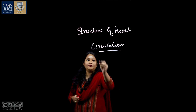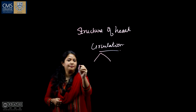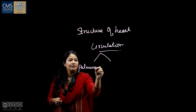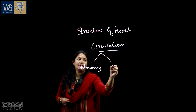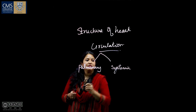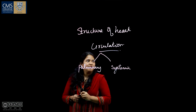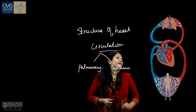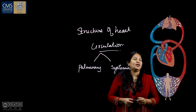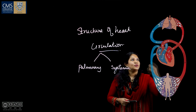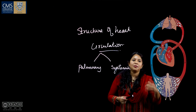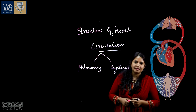The circulation is of two types: pulmonary circulation and systemic circulation. This is the circulation chart, and here we are discussing about the structure of circulation and the types of circulation connected in our body.